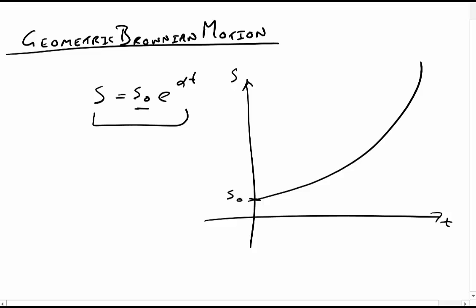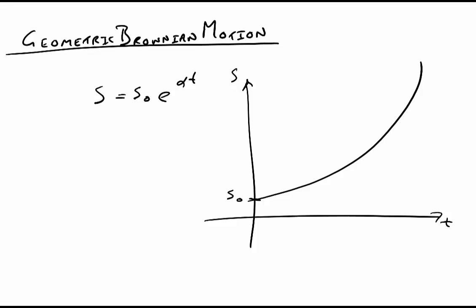You start at S0 and grow exponentially over time by some factor alpha. That's effectively where share price wants to go. But of course we know that share price follows this thing called Brownian motion, so we need to include some kind of Brownian motion into it.